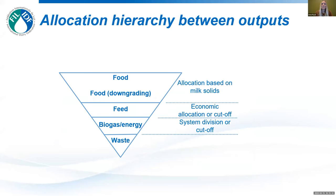We also developed an allocation hierarchy between the outputs, inspired by the food waste hierarchy. For food products — the main products coming out from a site — allocation is based on milk solids. For feed, which doesn't have the same value, economic allocation or a cutoff could be relevant. For biogas, it's system division or a cutoff. For waste, no allocation is needed — waste goes to treatment and emissions from waste are allocated between the different products.